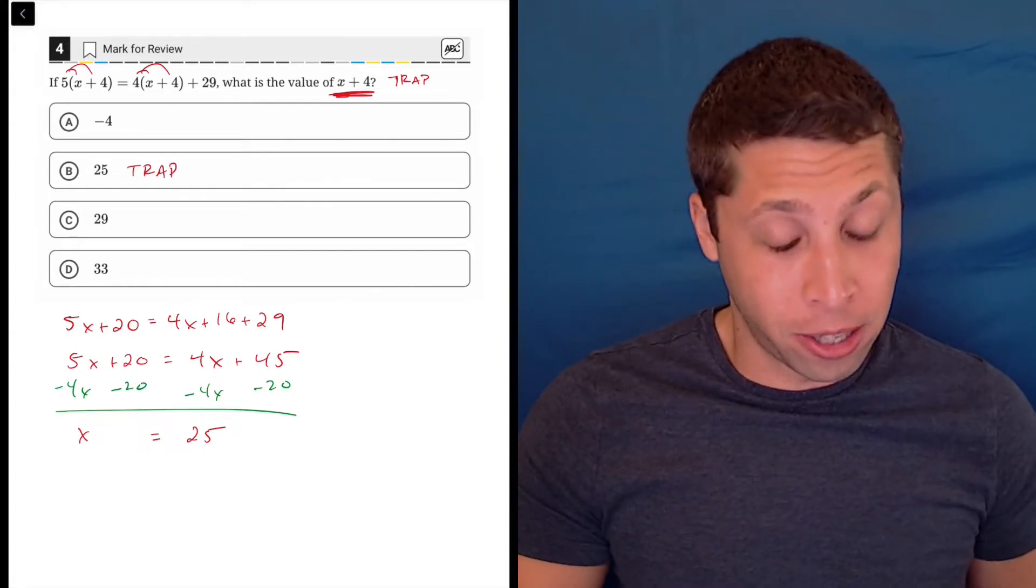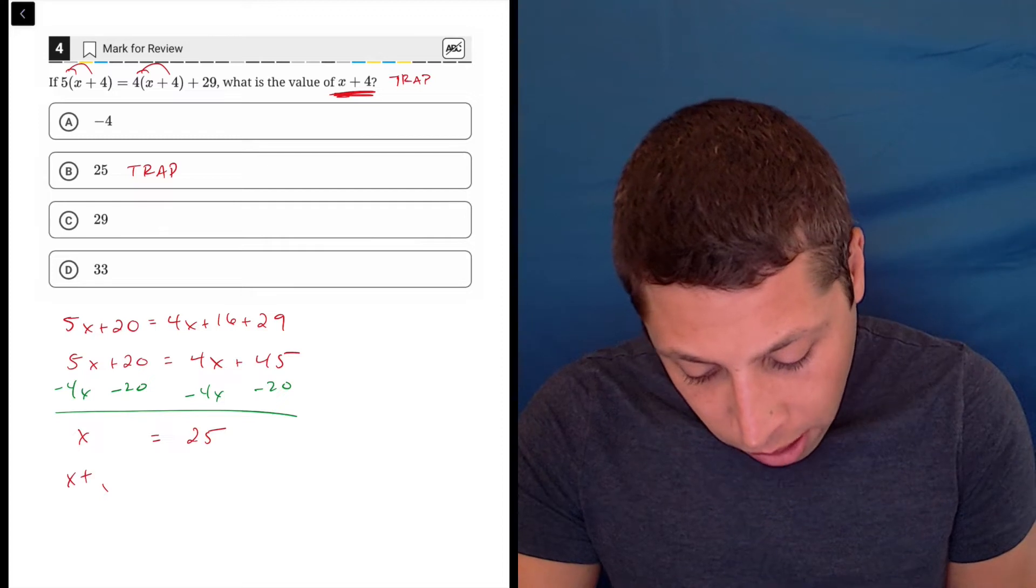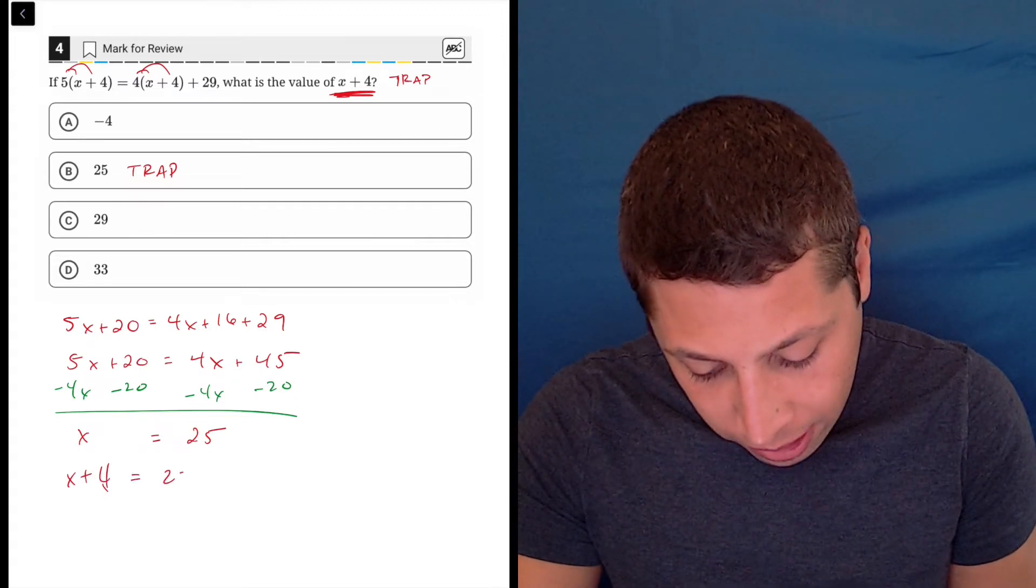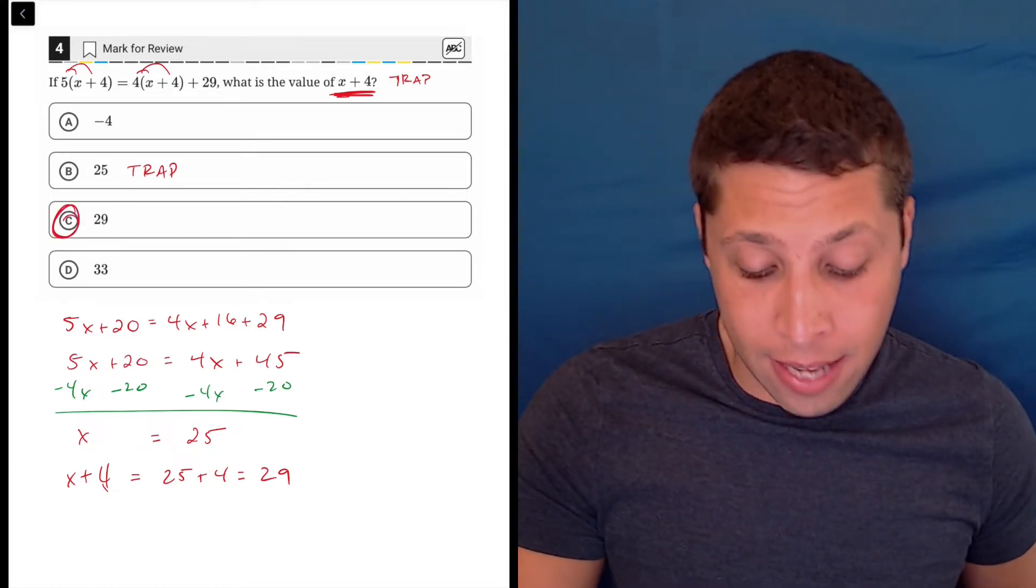But as I said, that is a trap answer because they don't want the value of x. They want x plus 4, and x plus 4 is 25 plus 4 is 29. So C is the actual answer.